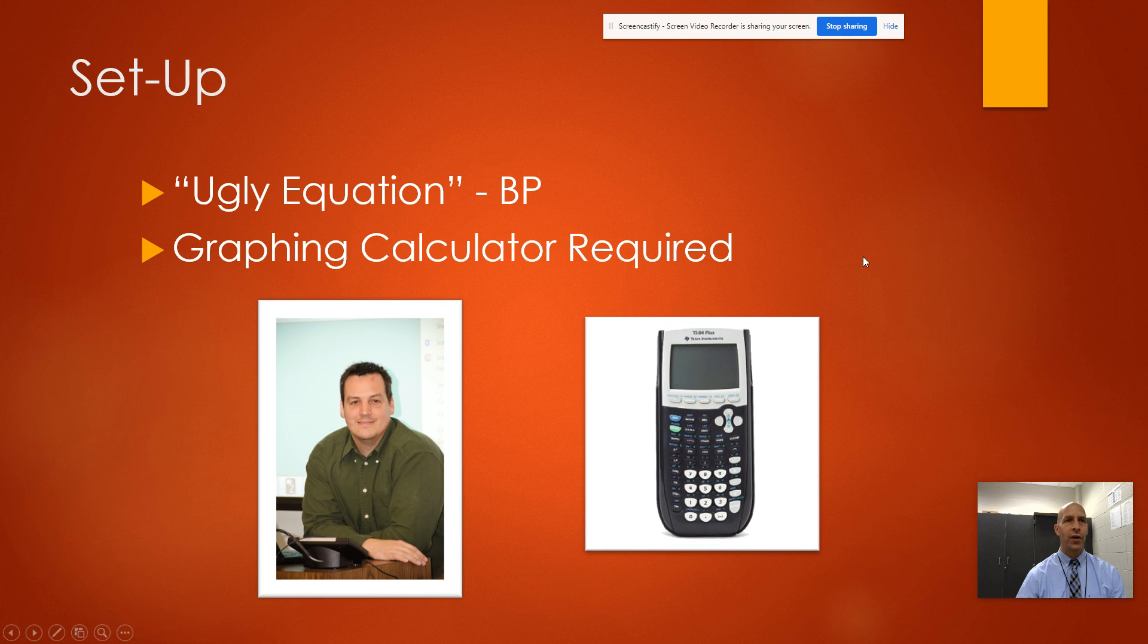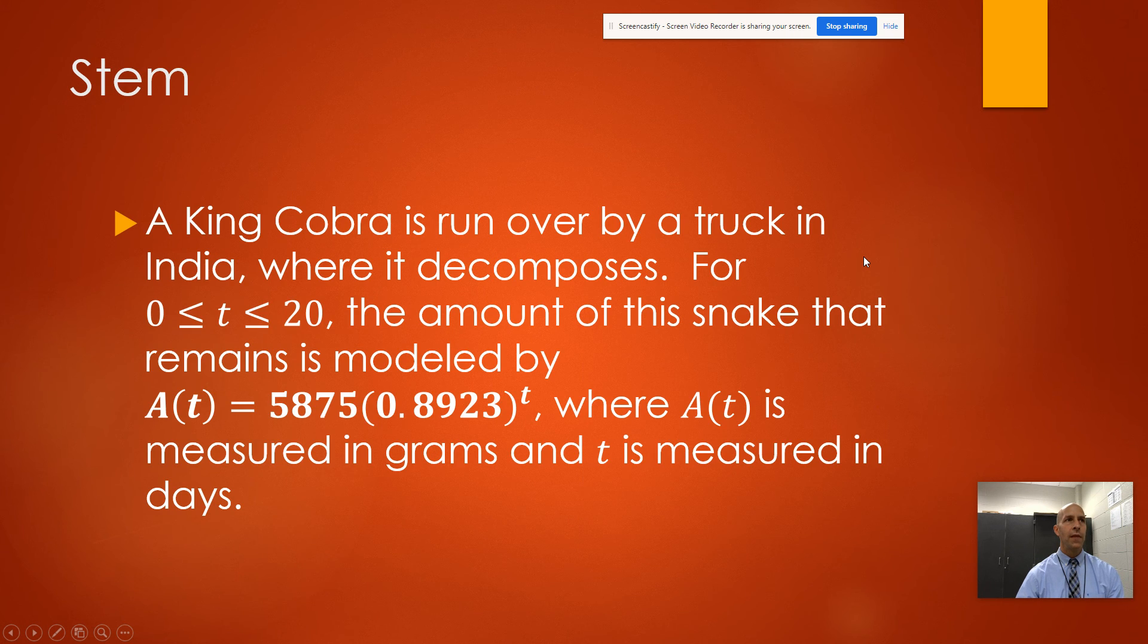Here's the stem of my question: A King Cobra is run over by a truck in India where it decomposes for 0 to 20 days. T is in days. The amount of the snake that remains is modeled by the following function: A(t) = 5875 times 0.8923 to the t power, where a is measured in grams and t is measured in days.